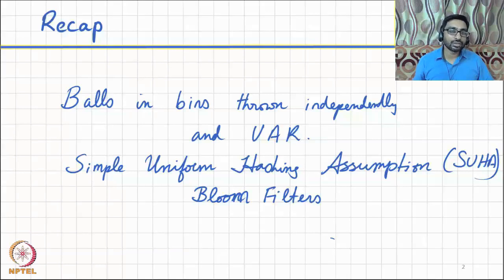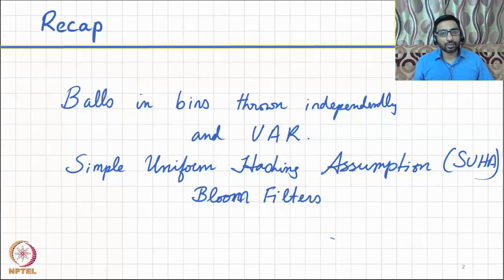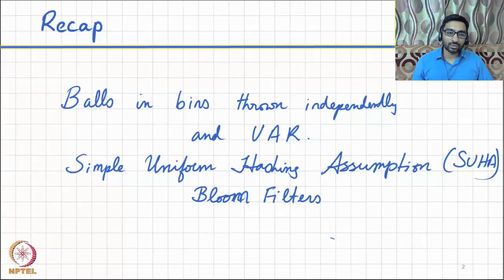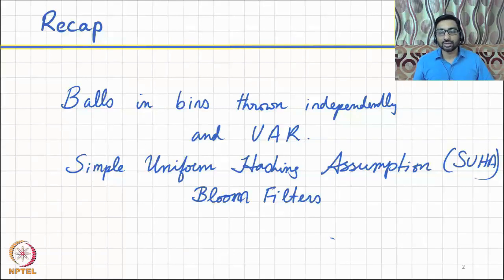We used this balls and bins framework to analyze hashing and we typically made the simple uniform hashing assumption — that when an item gets hashed, it is placed in a location chosen uniformly at random from all possible hash locations. Using this assumption we can invoke the ideas from the balls and bins framework. For example, when we look at chain hashing, the worst case performance correlates to the height of the most loaded bin in the balls and bins context.